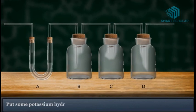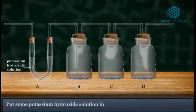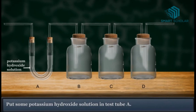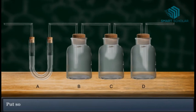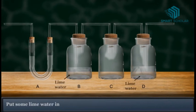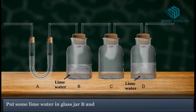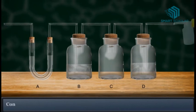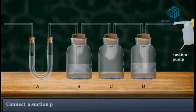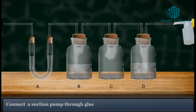Put some potassium hydroxide solution in test tube A. Put some lime water in glass jar B and D. Connect a suction pump through glass jar D.